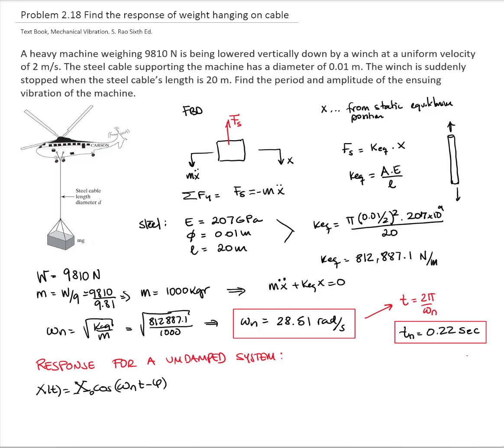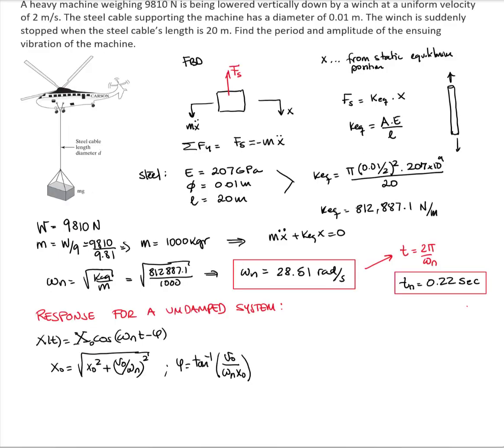The amplitude is defined as the square root of the initial position squared plus the velocity over the natural frequency squared. The phase angle is calculated as the inverse tangent of the velocity divided by the natural frequency times the initial position.